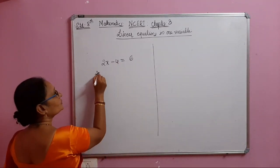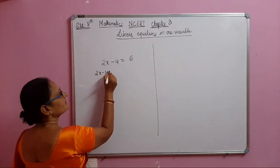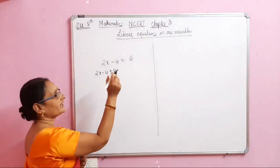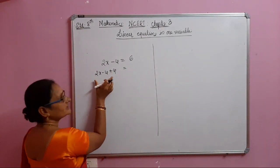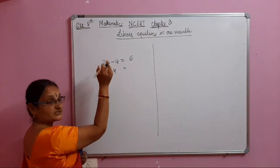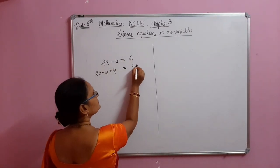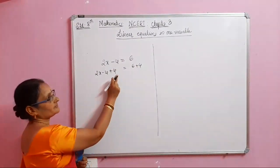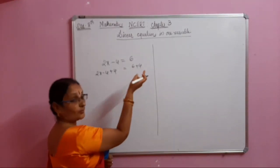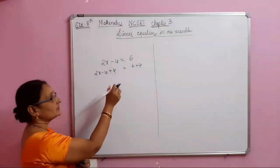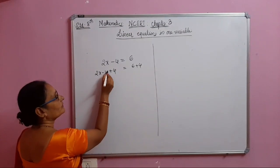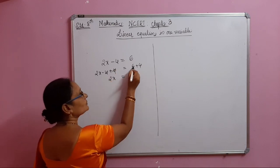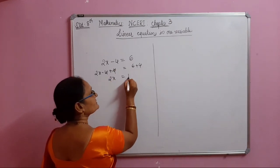I want to eliminate minus 4. So for 2x minus 4, I add 4 to both sides. Minus 4 plus 4 cancels out. Whatever we do to the LHS must be done to the RHS also. So: 2x equals 6 plus 4, which is 10.